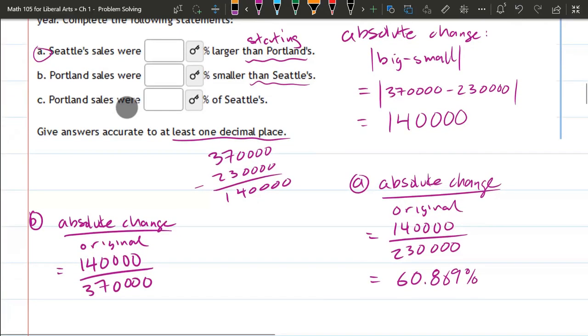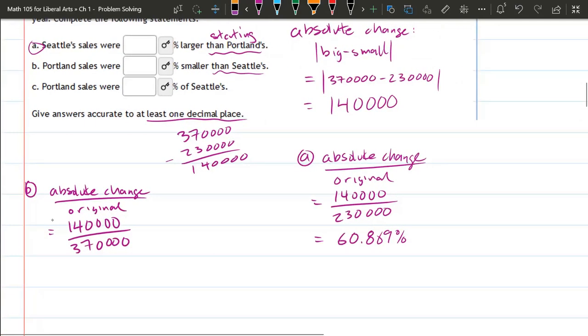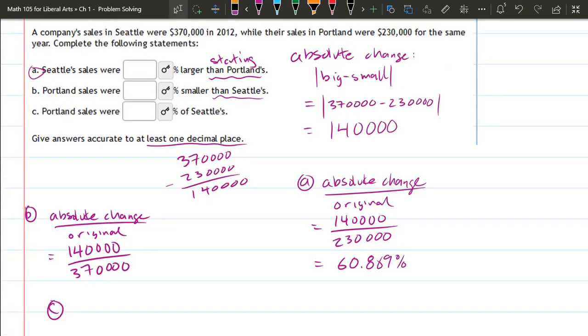Okay, part C seems the same, but it's a bit different. This doesn't say larger or smaller than. They want a direct comparison. So it's not comparing the change. It's comparing the two values.